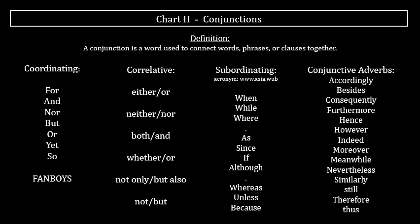Correlative conjunctions always come in pairs and connect words of equal importance. Examples include: either/or, neither/nor, both/and, whether/or, not only/but also, not/but.